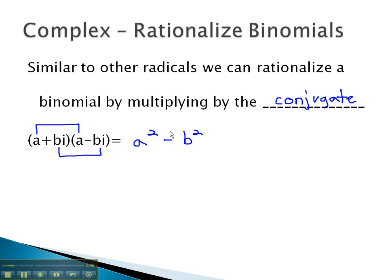However, remember i squared is negative 1, which will change the negative into a positive. Let's take a look at some examples where we rationalize by multiplying by this conjugate.